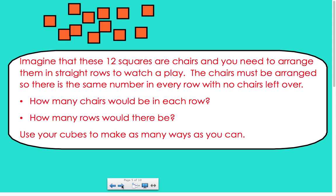Okay, so now that we know about arrays and dimension, let's see how it works. Imagine that these 12 orange squares are chairs and you need to arrange them in straight rows to watch a play. The chairs must be arranged so that there is the same number in every row and no chairs can be left over. How many chairs would we put in each row and how many rows would there be?